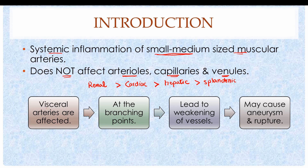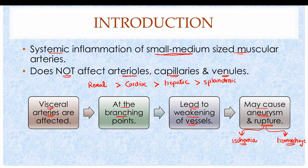The visceral arteries are most commonly affected at branching points where the arteries bifurcate. Polyarteritis nodosa leads to weakening of these blood vessels. Once the vessel walls become weak, there is a high chance of aneurysm development and rupture, leading to ischemia of the supplied organ and hemorrhage.